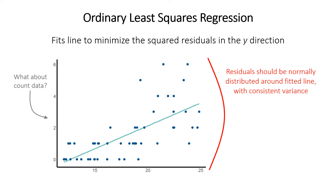But what if we have count data? For counts the residuals usually don't work this way. For one thing, counts are whole numbers but the normal distribution is a continuous probability distribution. Also, counts typically have smaller variance when the mean is small and larger variance when the mean is large — seen in the wedge or triangle shape distribution of points on the plot here. A final problem is that a linear regression might predict counts of less than zero, which doesn't make any sense.